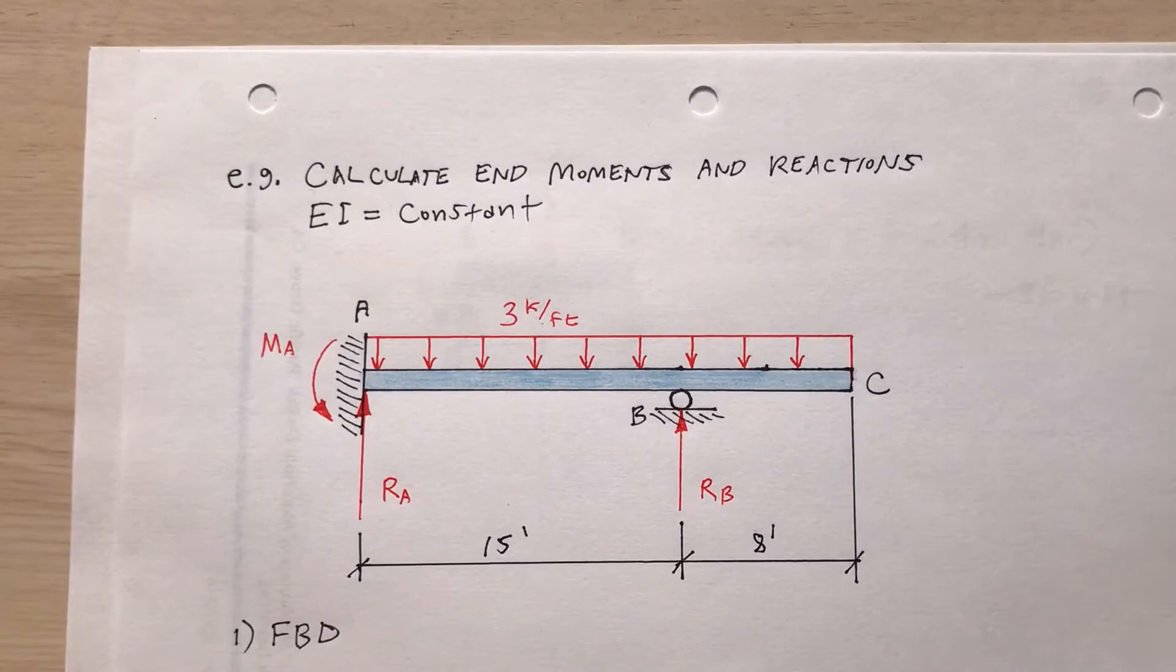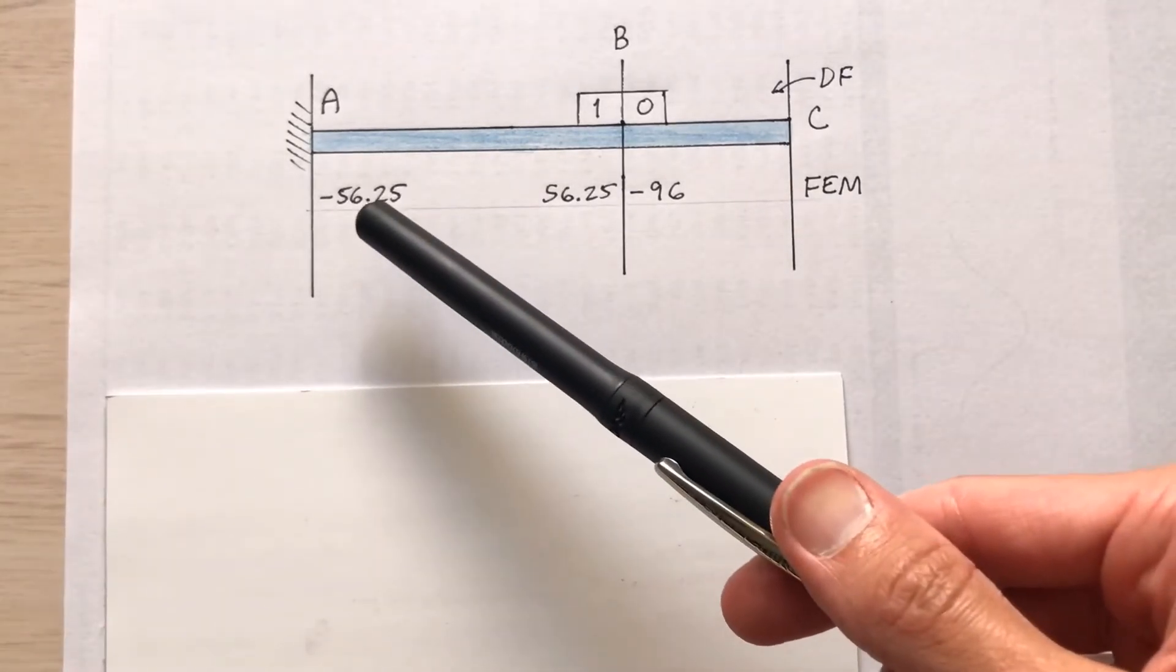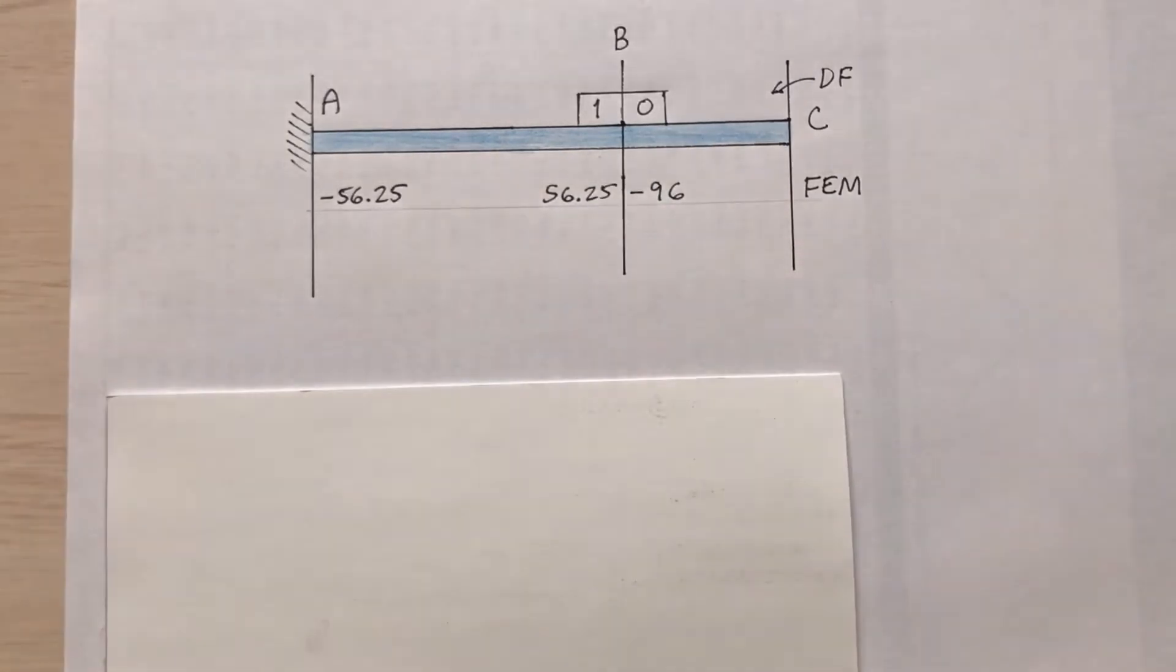Now I'm going to organize all this into a chart as I have done in my previous examples. Redraw the beam and put the fixed end moments on there. So from A to B negative 56.25, B to A positive 56.25. Remember I found those a minute ago. For BC it was negative 96.